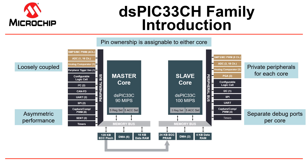Looking at the block diagram of the DSPIC 33CH 128 MP508, there are two DSPIC cores — a master and a slave core in a single chip. These cores are loosely coupled with their own dedicated resources, which means both cores can operate autonomously. The cores are asymmetric in performance, with the master core operating at a maximum of 90 MIPS and the slave operating at 100 MIPS.